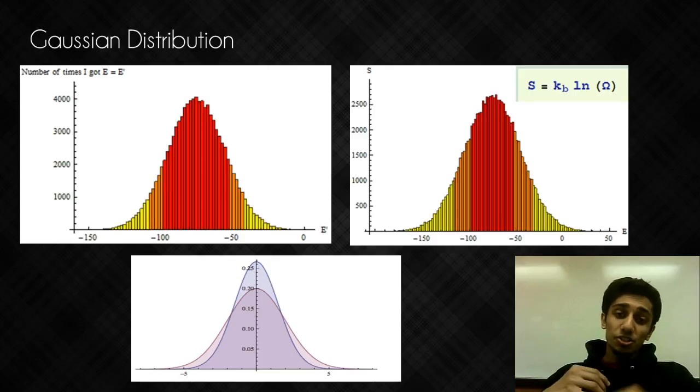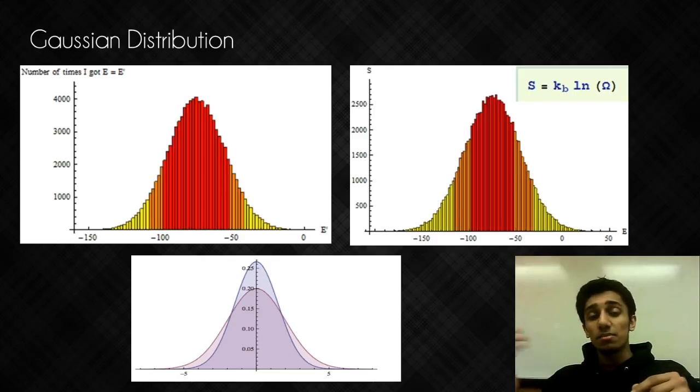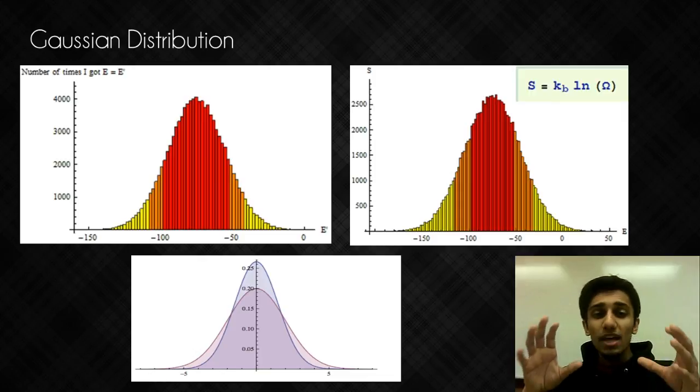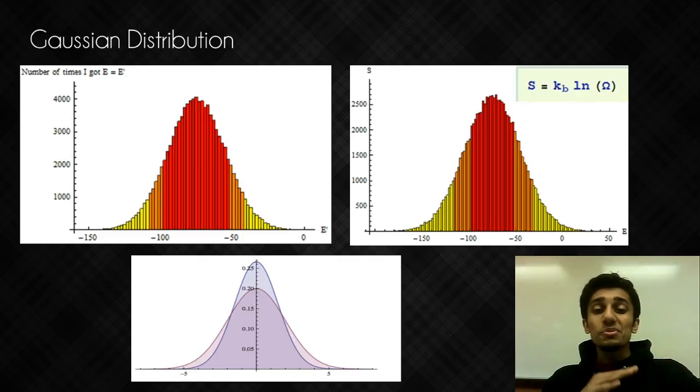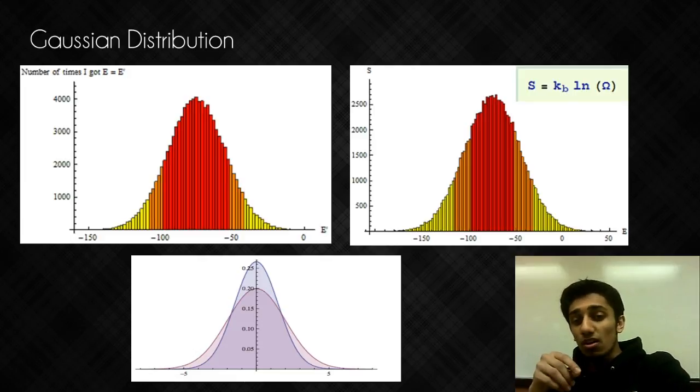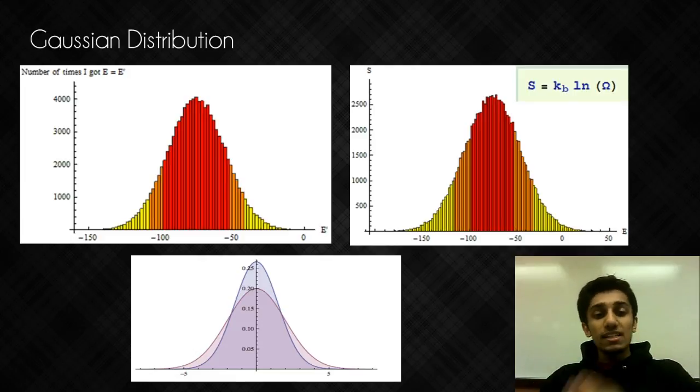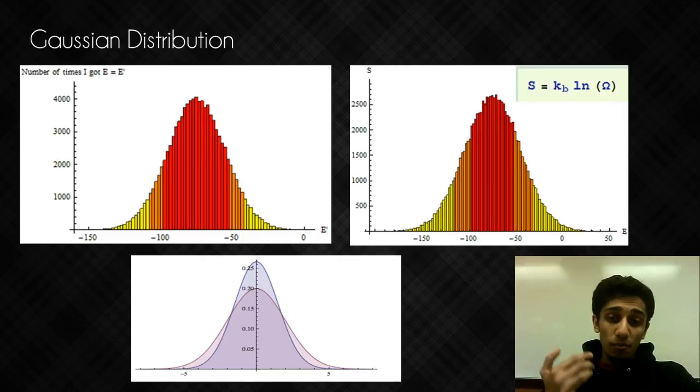So from this, we can develop a histogram as shown here in the top left, and we clearly see it is a relatively uniform Gaussian distribution as expected. So moving forward, we want to look to the third law of thermodynamics to relate what we are seeing to entropy using a fundamental law, and so we'll graph our energy against entropy using the natural log of omega multiplied by the Boltzmann constant.